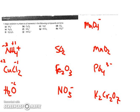With H2O, oxygen has the preference with minus two, which leaves hydrogen with a plus one charge.